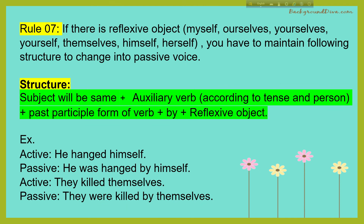Rule 4: If there is a reflexive object — myself, ourselves, yourself, themselves, himself, herself — these are called reflexive objects. If you find this kind of object in the sentence and you are asked to change it into passive voice, you have to use the following structure: the subject remains the same, plus auxiliary verb according to tense and person, plus past participle form of the main verb, plus 'by' plus the reflexive object.